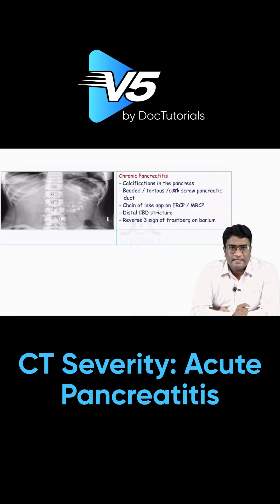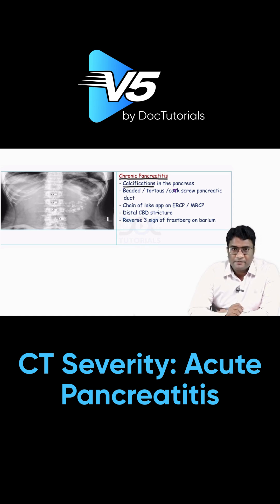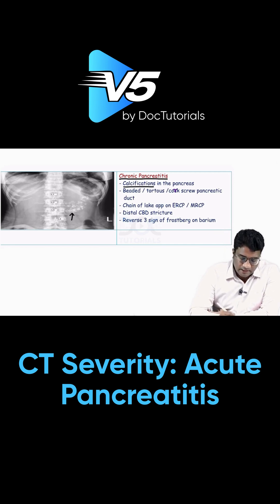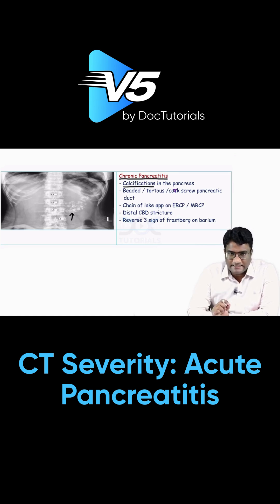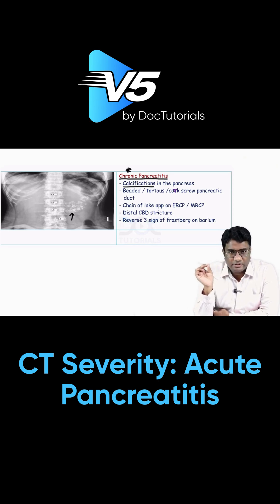The next topic is the imaging findings in chronic pancreatitis. Chronic pancreatitis will have presence of calcification in the pancreas — on abdominal radiograph or CT scan, if you see calcific areas in the region of the pancreas, that is suggestive of chronic pancreatitis. Calcifications are seen in chronic pancreatitis, and chronicity leads to fibrosis, which leads to strictures and dilatations, giving a beaded or tortuous appearance of the main pancreatic duct.